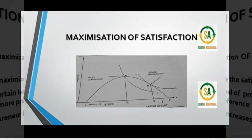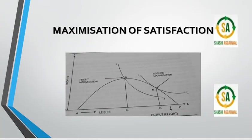We can understand this from a graph. The vertical axis shows net profit — that is, the difference between total revenue and total cost. The horizontal axis represents effort and leisure. On one side you have more leisure and less effort, and on the other side more effort and less leisure.